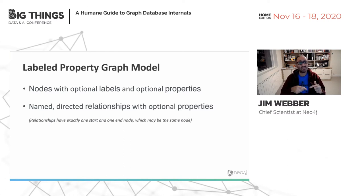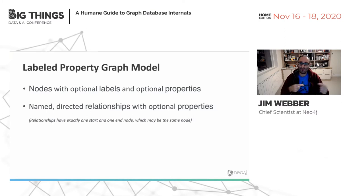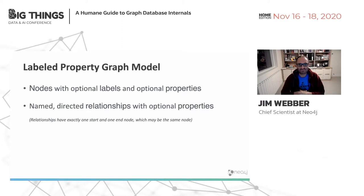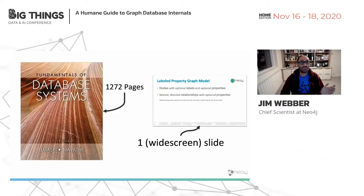Connecting those nodes, you can have named directed relationships: follows, loves, hates, bought, returned, connects. Those named directed relationships can also have properties on them. So in the tube map, for example, you might have travel time between the stations, or weights for a general route-finding algorithm. Relationships always have exactly one start node and one end node, and they can loop back to themselves. And it turns out that's the whole data model you needed to learn.